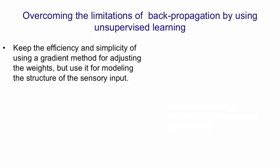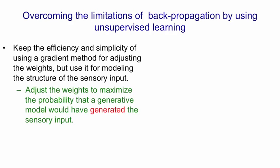So one way to overcome the limits of backpropagation is by using unsupervised learning. The idea is that we want to keep the efficiency and simplicity of using a gradient method and stochastic mini-batch descent for adjusting the weights. But we're going to use that method for modelling the structure of a sensory input, not for modelling the relation between input and output. The weights are going to be adjusted to maximise the probability that a generative model would have generated the sensory input.